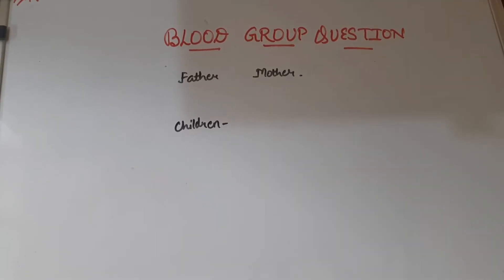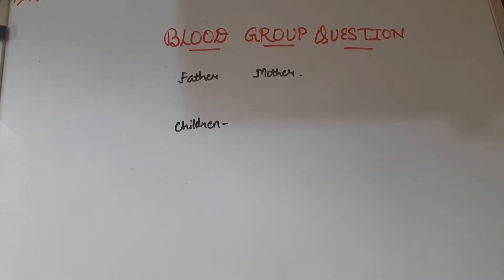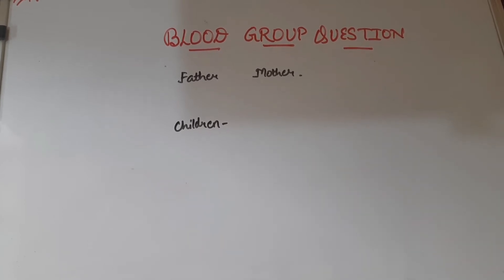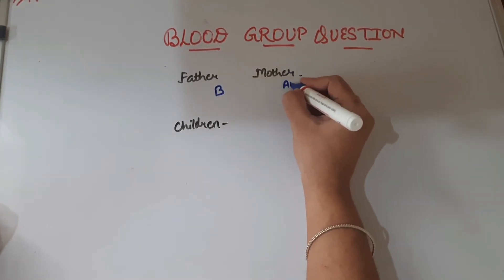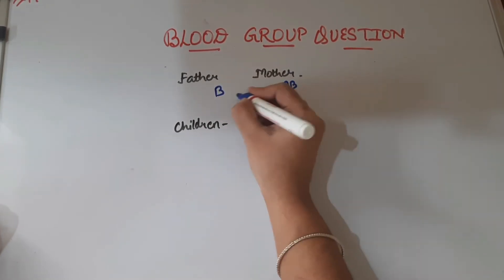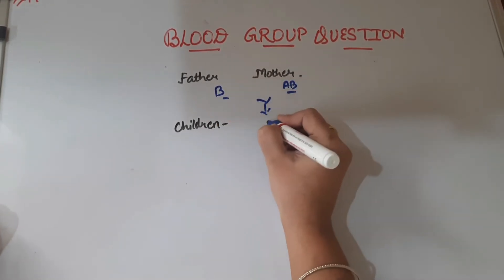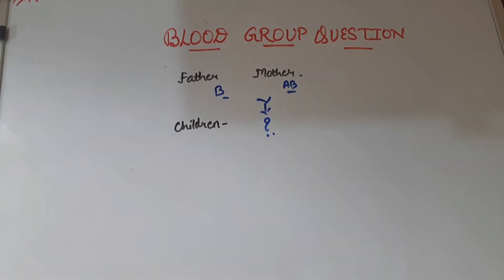Hello everybody and welcome back to my channel Query Solution. Today, to continue our discussion on the series of blood group questions, we are going to take up another example where we study a case where the father belongs to blood group B and the mother belongs to blood group AB. We will explore what possibilities we can get in the case of children, so watch the video completely.